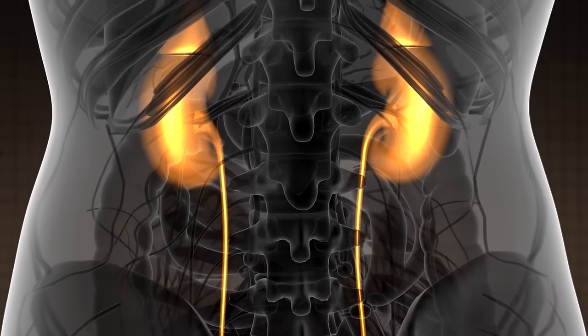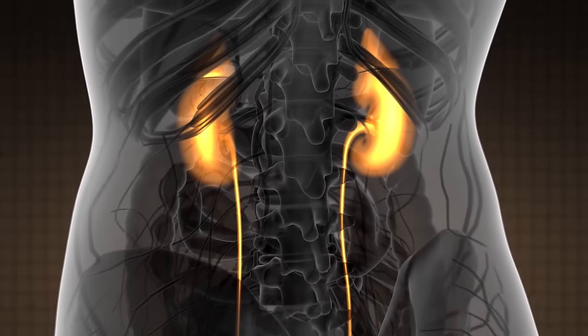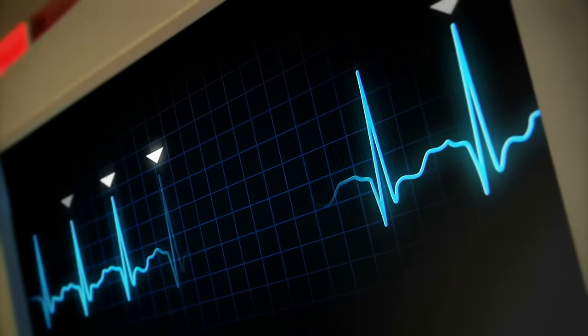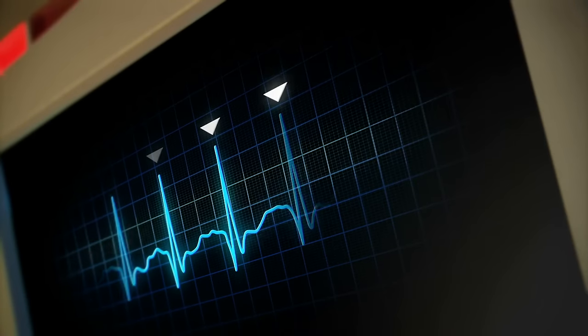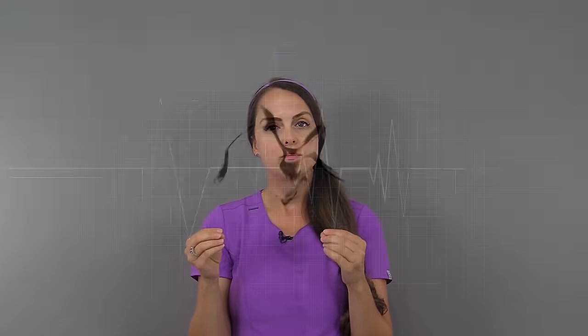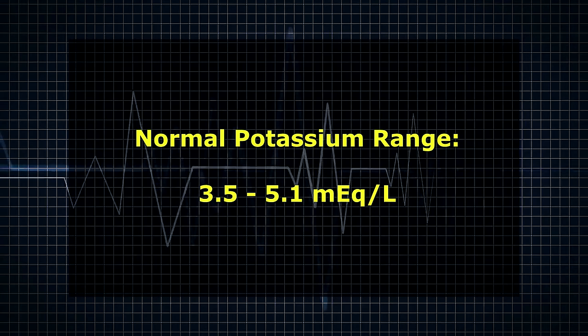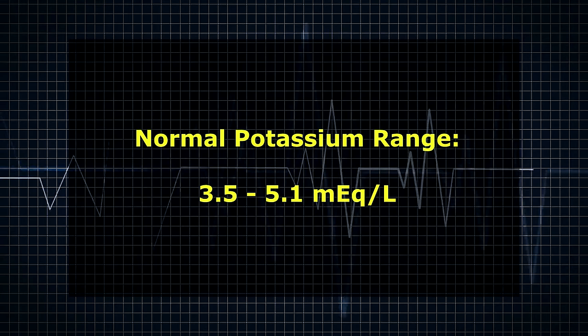You want to look at how loop diuretics work. When they're working on the nephron to help diurese, which means remove fluid from the patient, they will drop that potassium level. So the patient is going to urinate all their potassium out. When a patient loses too much potassium, it can cause EKG changes and hypokalemia can lead to those rhythm changes. You would also want to review your electrolytes and their normal ranges. With potassium, a normal range is about 3.5 to 5.1 milliequivalents per liter.